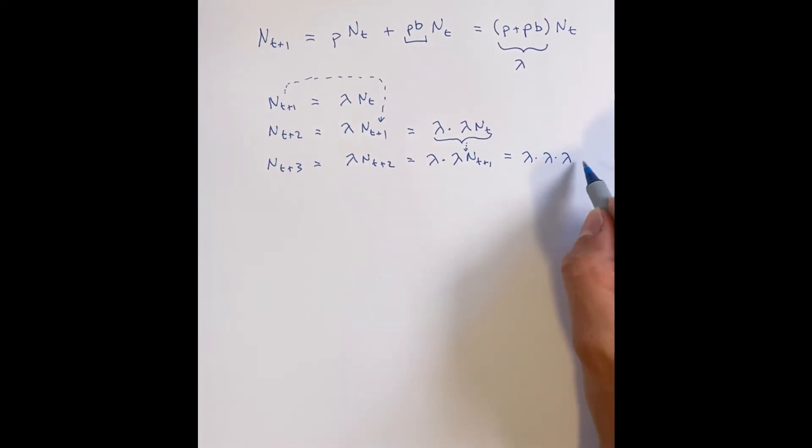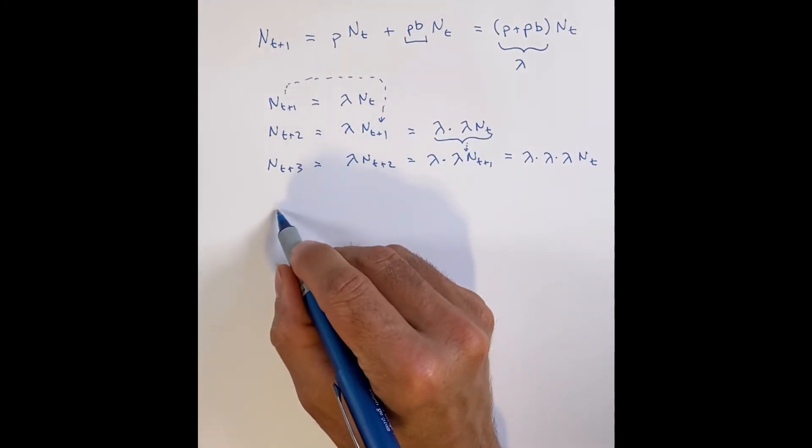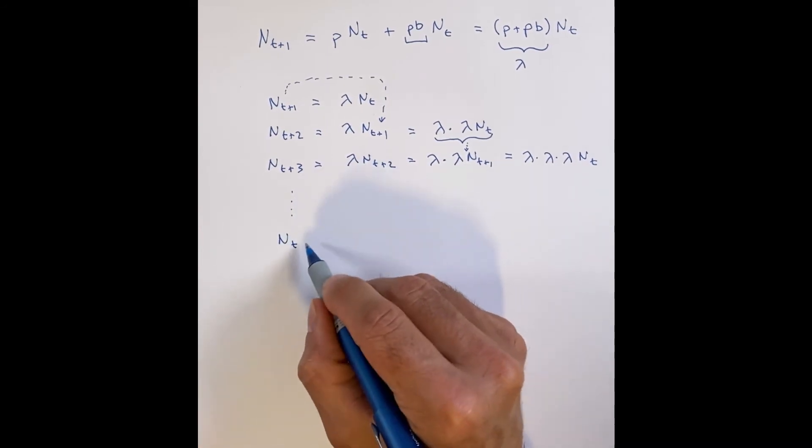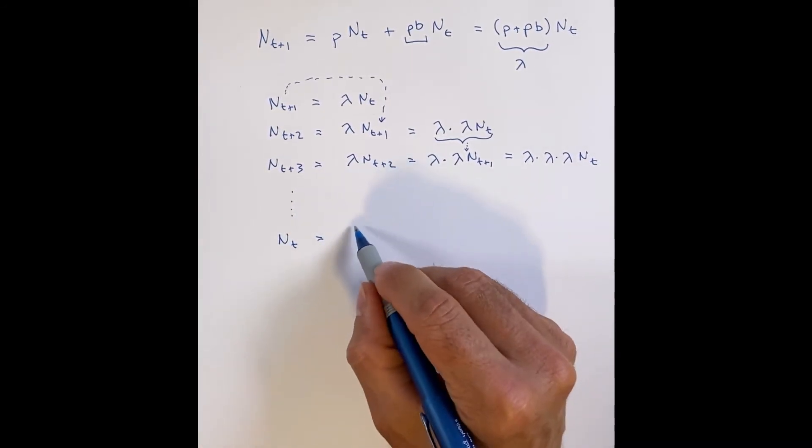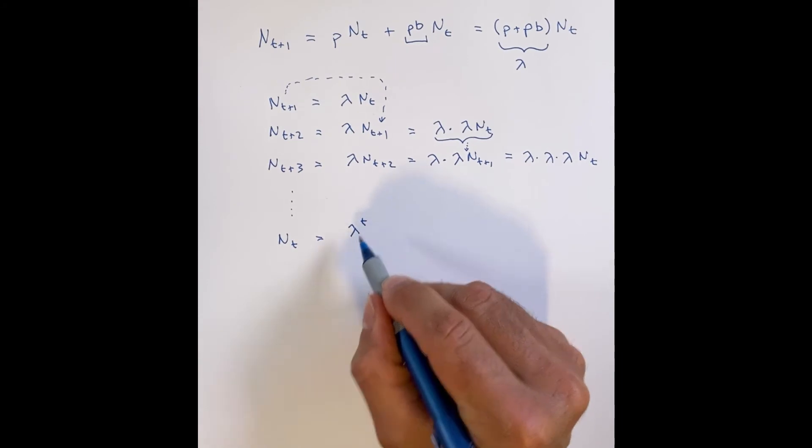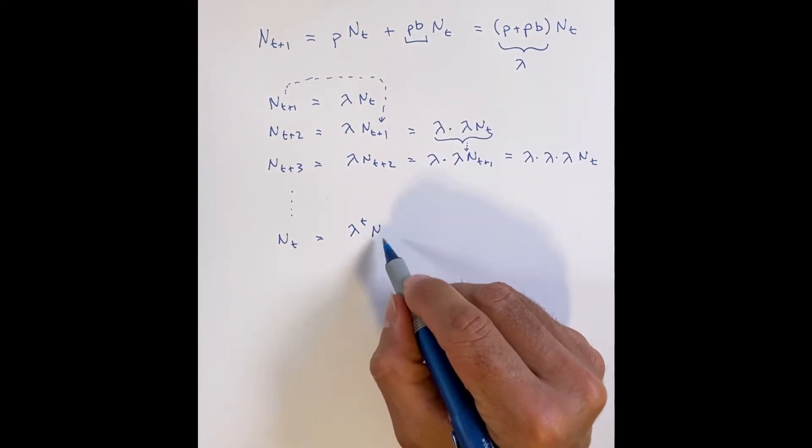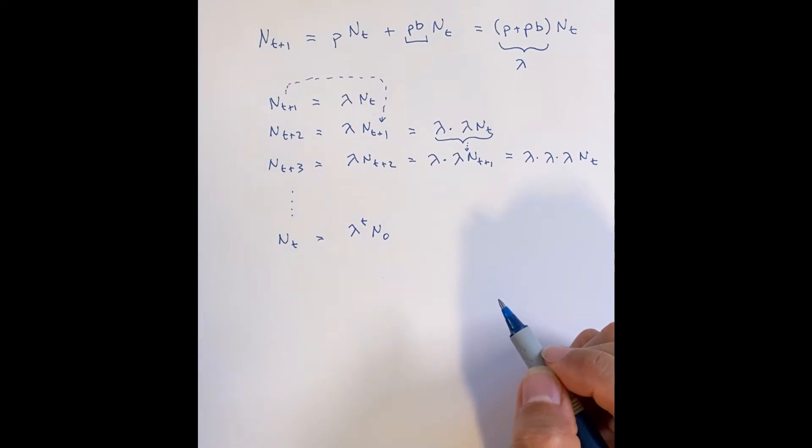So really, all you need to know is how many individuals you have to start with, the rate of increase, the finite rate of increase, and how many generations you've been following this, or how many steps you've been following this. And here's the generalized form. N times t, any t, is equal to lambda to some exponent, how many times you multiply lambda by itself, and some initial size of the population.